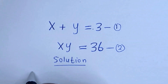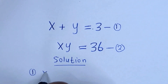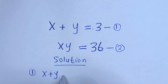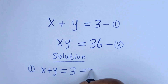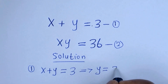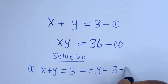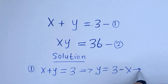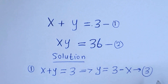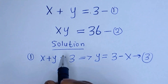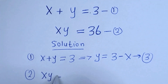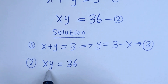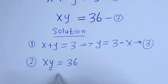Here, from equation 1, S plus Y is equal to 3, so Y is equal to 3 minus S. Let us call this equation 3. From equation 2, S times Y is equal to 36. Let us substitute for Y here, which is 3 minus S.